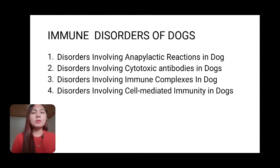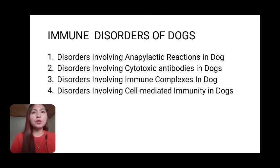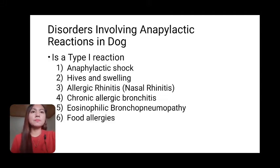In general, diseases associated with the immune system take two forms: insufficient immune function causing immunodeficiencies, manifested as increased susceptibility to infections, and diseases resulting in hypersensitivities and autoimmunity. Immune disorders fall into four types: disorders involving anaphylactic reactions, cytotoxic antibodies, immune complexes, and cell-mediated immunity in dogs.